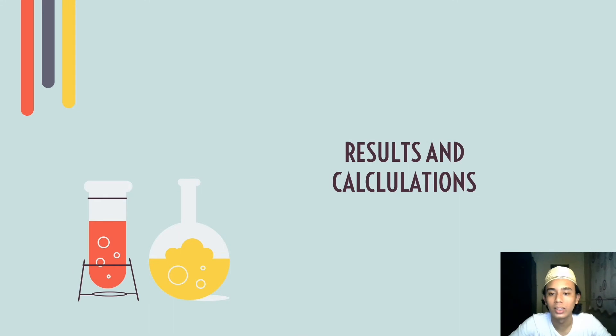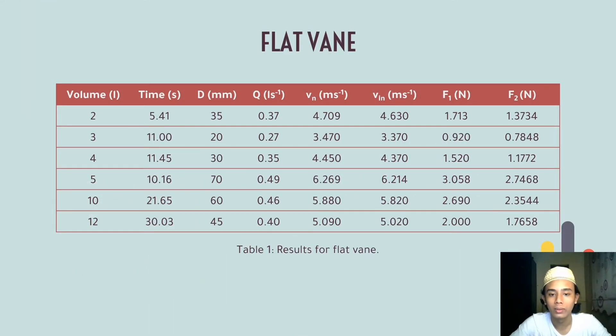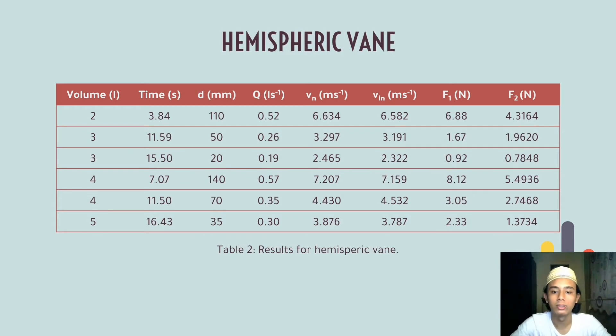Let's move on to the results and calculations. Table 1 here shows the result for flat vane. Here we use different values of volumetric flow rate. Table 2 shows results for hemispheric vane. The hemispheric vane is also repeated using different volumetric flow rate.